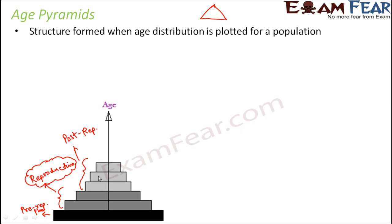As aging happens, the number of individuals in the population starts reducing. As you reach towards old age, a lot of people start dying either because of disease, illness, or deterioration in their health, and the total population starts reducing. We will see how we can predict the type of population growth by looking at the age pyramid.